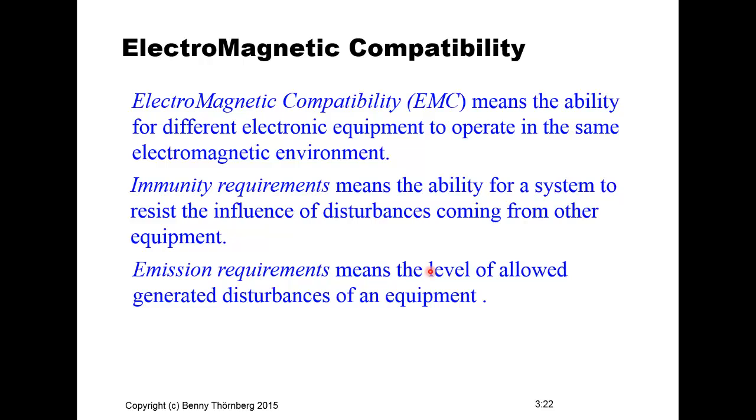EMC — electromagnetic compatibility — means the ability for different electronic equipment to operate in the same electromagnetic environment. Immunity requirements means the ability for a system to resist disturbances coming from other equipment. Emission requirements means the allowed level of generated disturbances from equipment. You are required by law to follow certain rules for both immunity and emission.